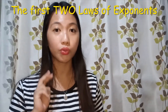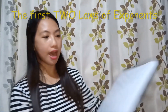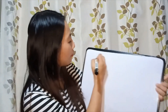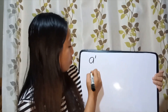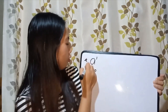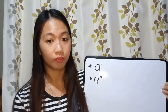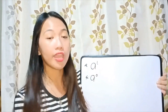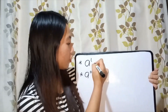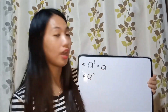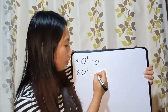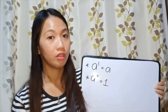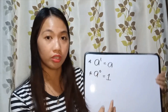Let us start with the first two laws of exponents. We have 'a' as a variable, where a is any real number. It says that a raised to 1 and a raised to 0 are two fundamental exponents in Algebra. Anything raised to the first power is the number or variable itself — so the answer is a. And anything raised to the 0 power is always equal to 1.